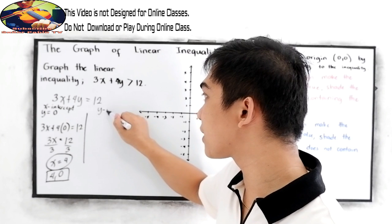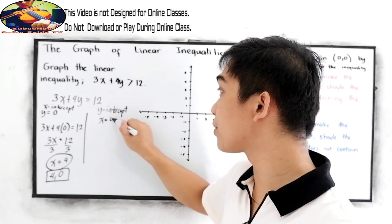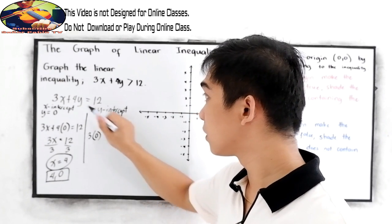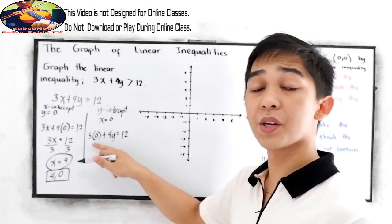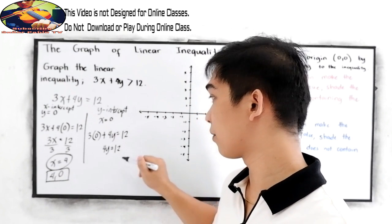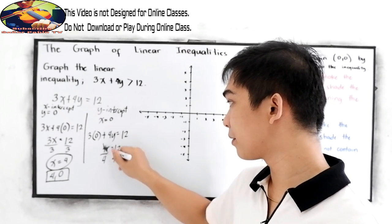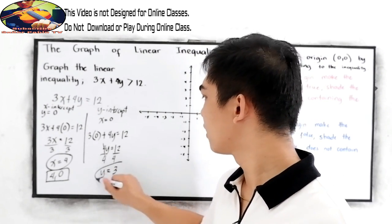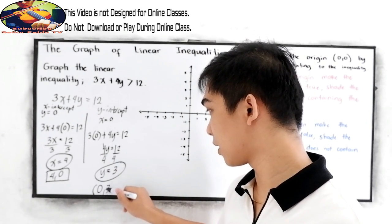Now to find the y-intercept, let x be equal to 0. So 3 times 0 plus 4y is equal to 12. 3 times 0 is 0, so we have 4y is equal to 12. Get y — divide by 4. y is equal to 12 divided by 4, that is 3. So our y-intercept is (0, 3).